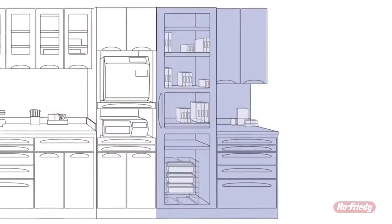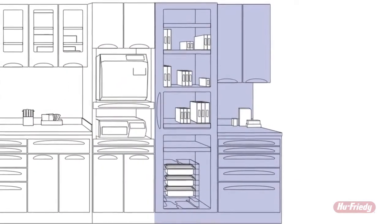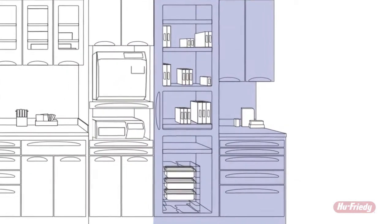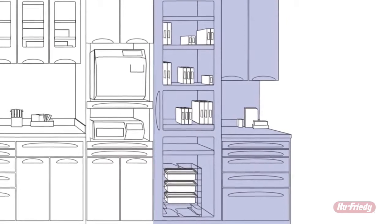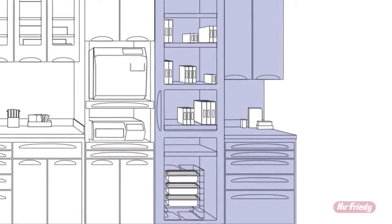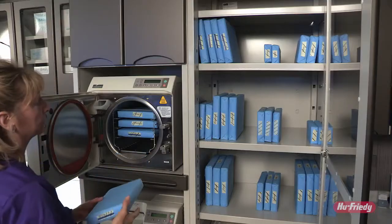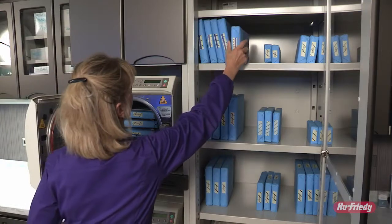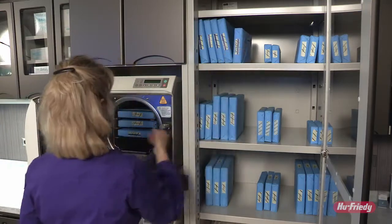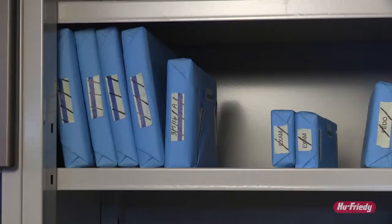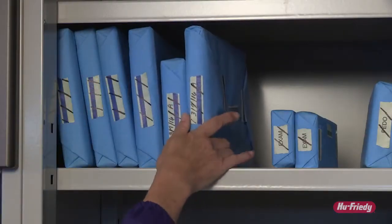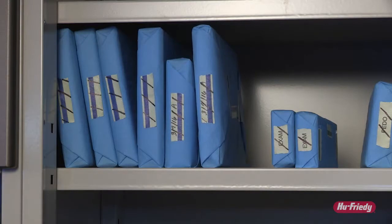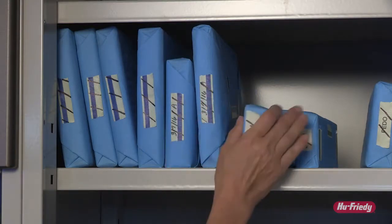Sterile patient care items should be stored in a closed and well-ventilated area that will protect against dust and moisture. This will help to maintain sterility of the packages until ready to use. If possible, stack the cassettes vertically on their sides during storage to prevent crushing or tearing of the sterile packaging.